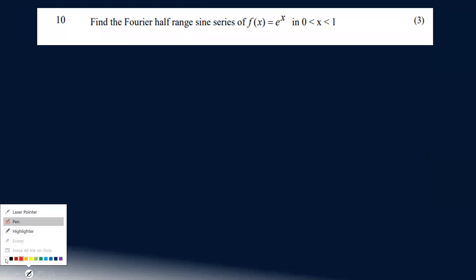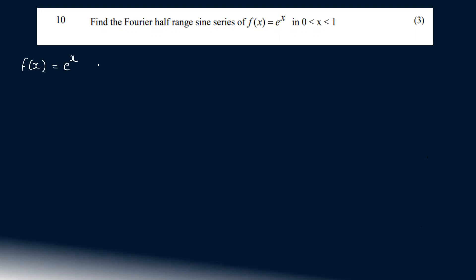Find the Fourier sine half range series of f(x) = e^x in 0 ≤ x ≤ 1, that is equal to value 1.